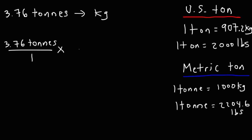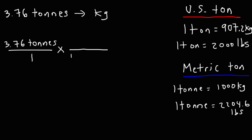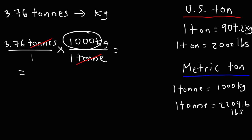Put that over 1. Now you need to identify the appropriate conversion factor. Notice that we have the unit tons on the top part of the first fraction, so we want that same unit on the bottom part of the second fraction. The other part of the conversion factor goes on the top of the second fraction. The unit tons cancel, and since 1,000 is on top, we multiply: 3.76 times 1,000 equals 3,760. That's how we convert from tons to kilograms.